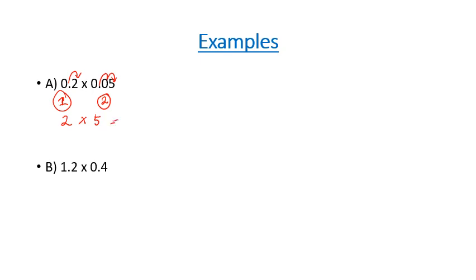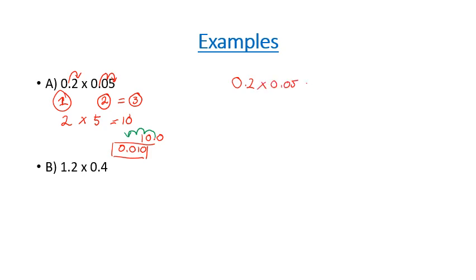2 times 5 is going to equal 10, and then we just need to move the decimal spot back a total of three times, because we moved it a total of three times. So if we've got 10.0 and we move the decimal spot back three times — one, two, three — we end up with an answer of 0.010, or 0.01. So 0.2 multiplied by 0.05 equals 0.01.